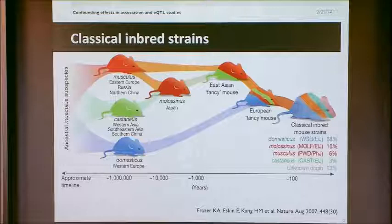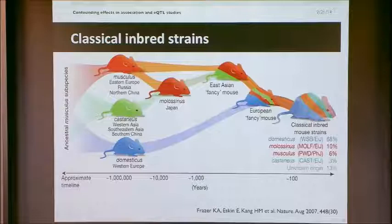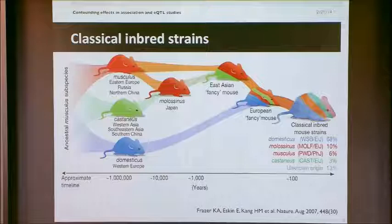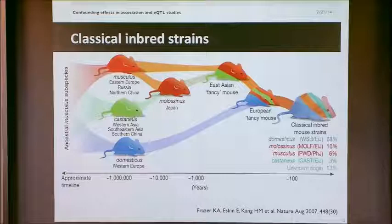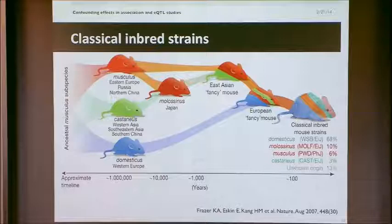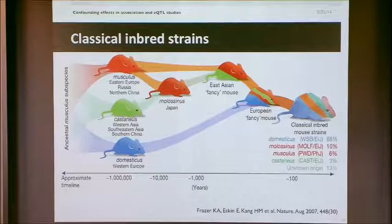Essentially you have three subspecies of mice that arose a long time ago. Initially in Asia, people decided to have mice as pets and started breeding them. Then in Victorian England, people also had mice as pets and bred these English pets with Asian pets to make exotic-looking pet mice. About 100 years ago someone bought these pet mice, inbred them, and those mice are now one of the foundations of medical research. The genetic composition of the mice we use today is really complex and completely arbitrary.